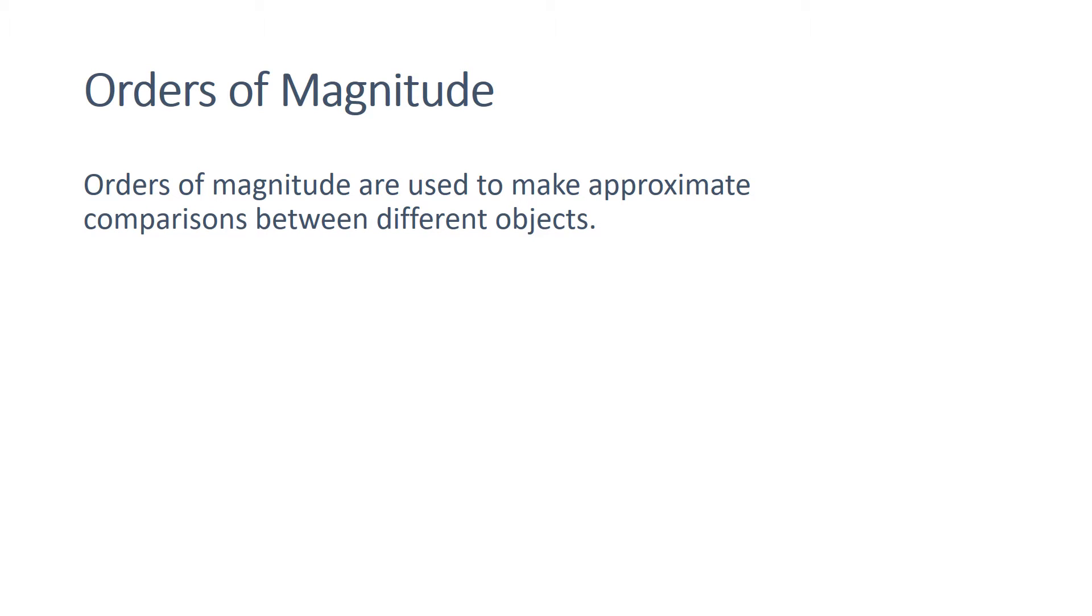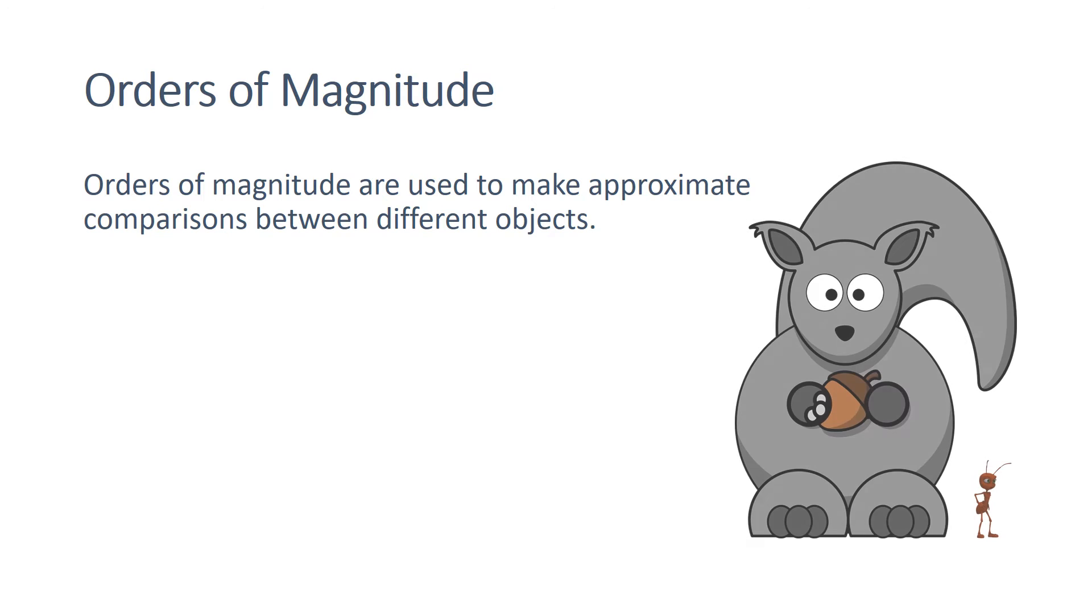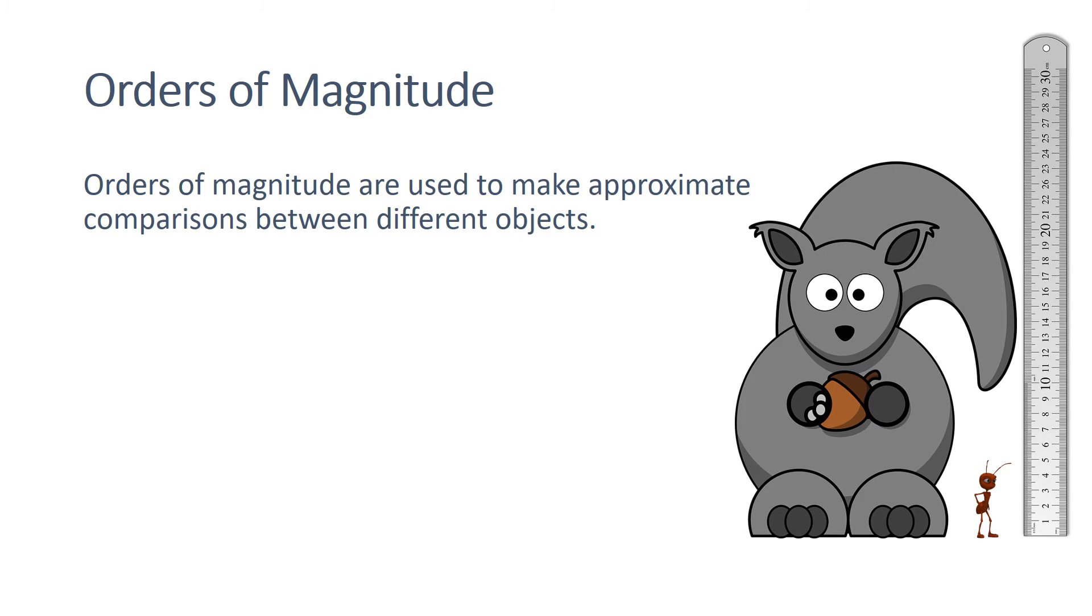Orders of magnitude are used to make approximate comparisons between different objects. If something is about 10 times bigger than another object, then we can say that it's one order of magnitude larger.